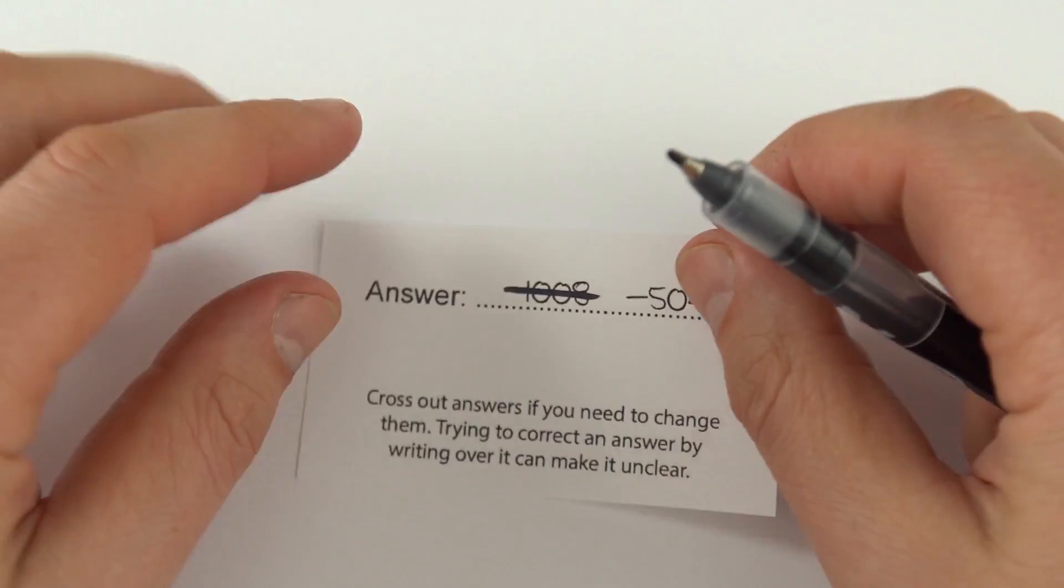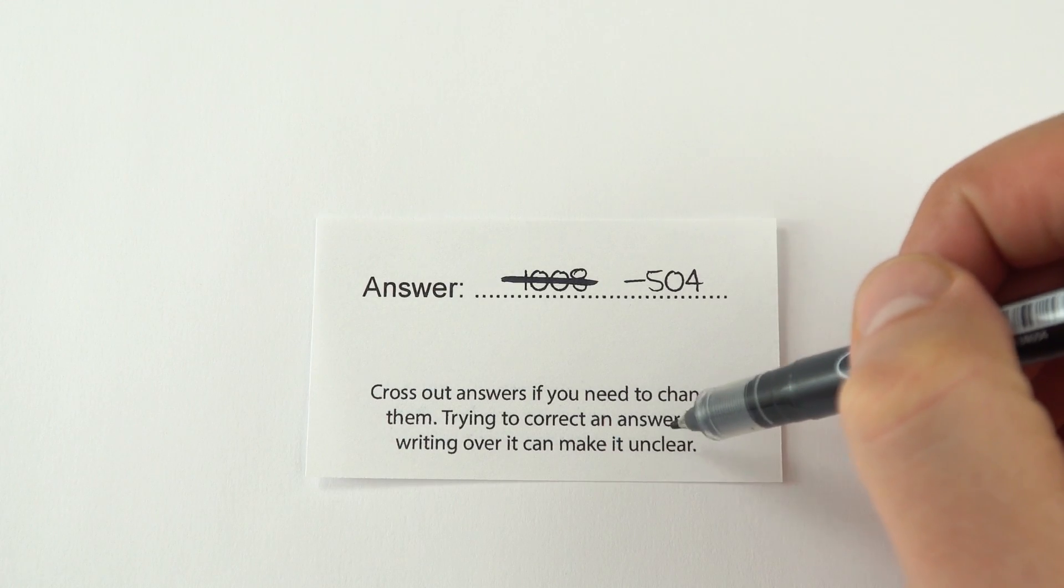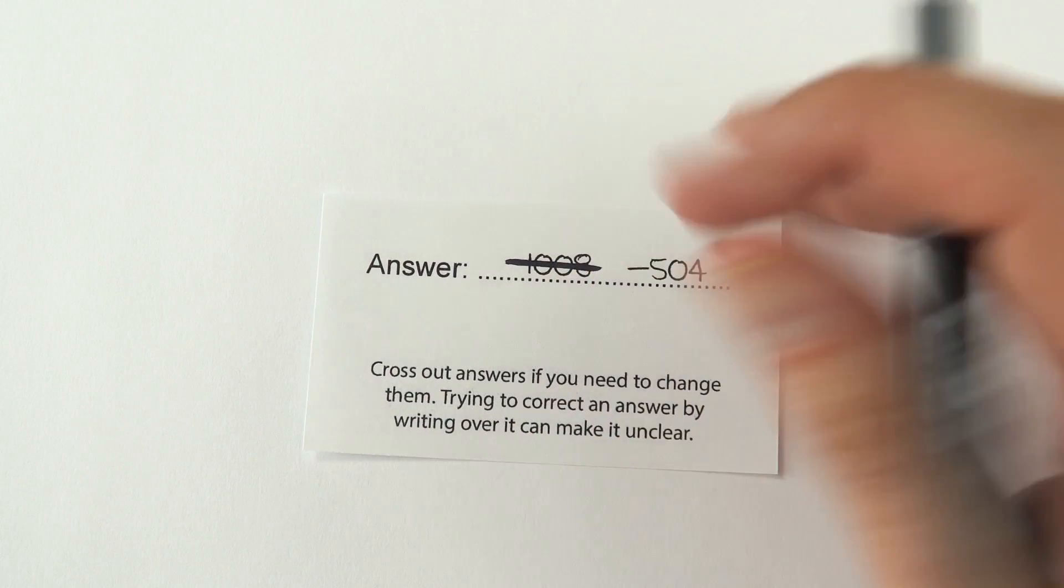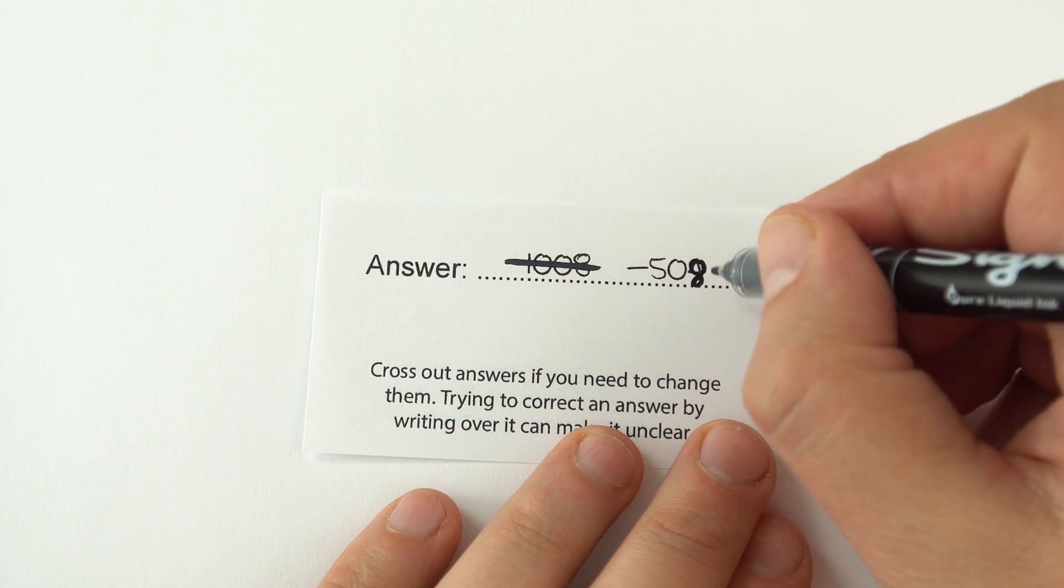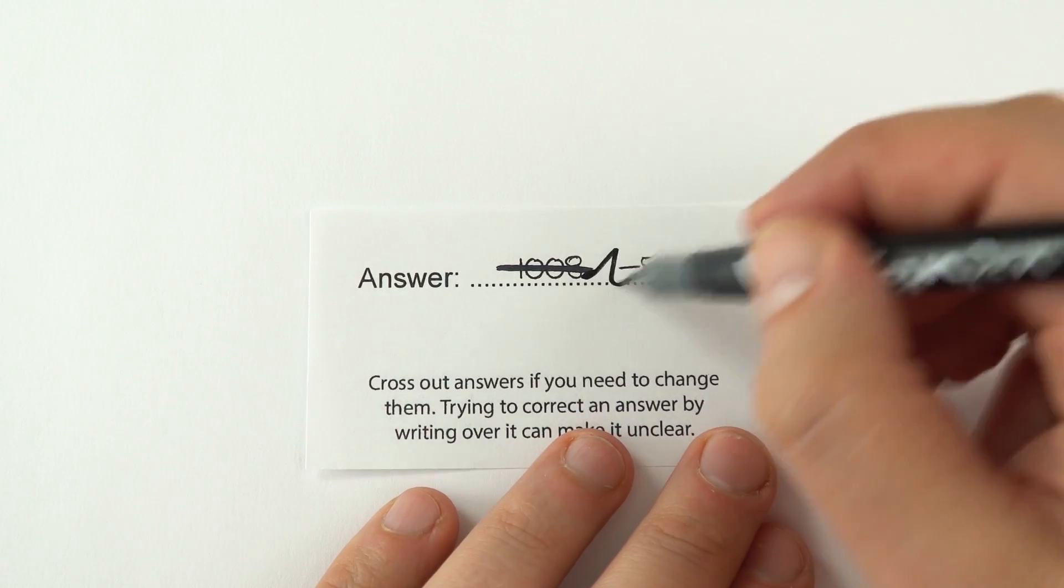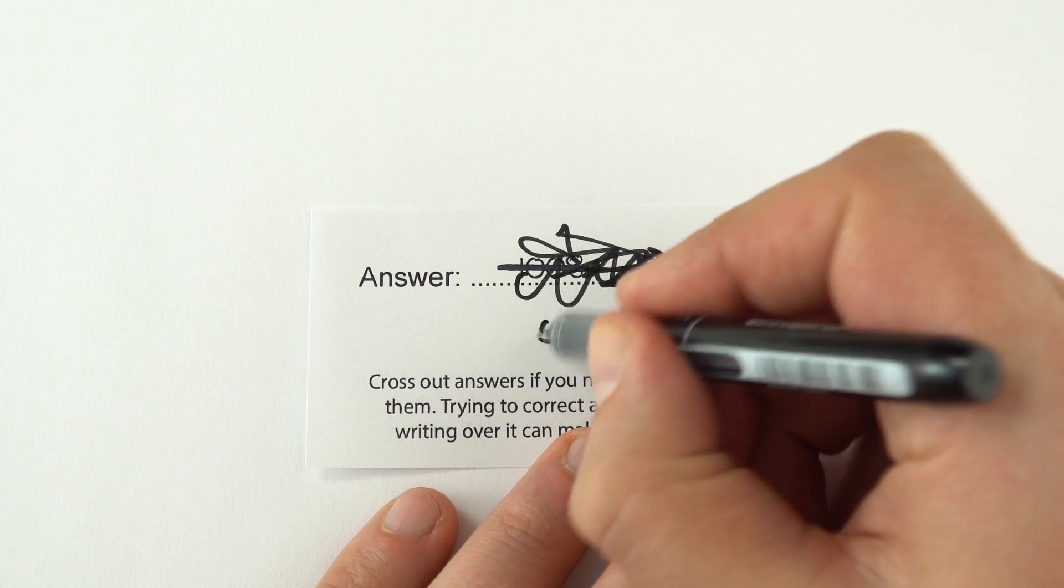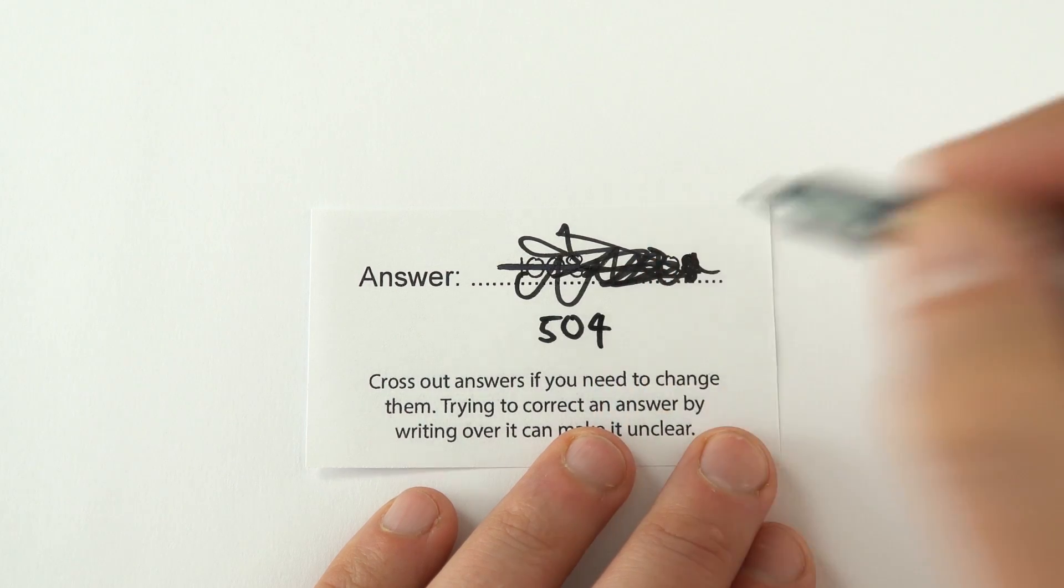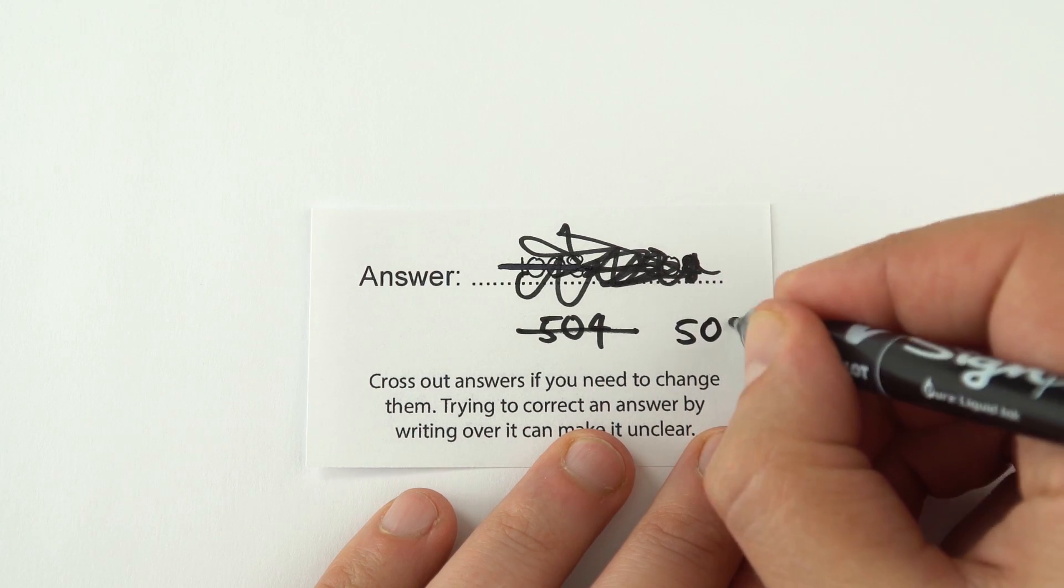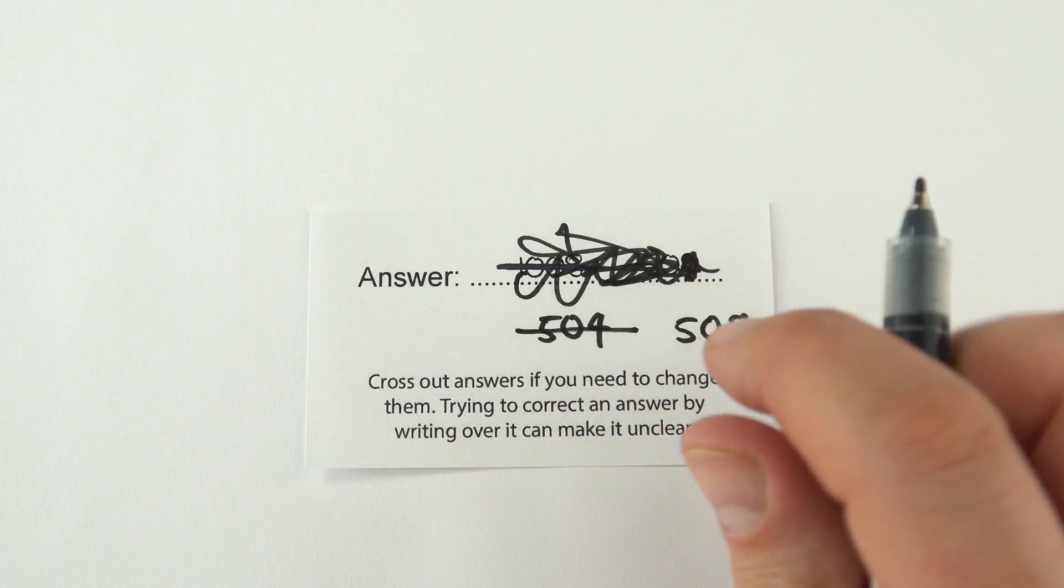In terms of keeping your answers nice and clear, trying to correct an answer by writing over it can make it unclear. Often this is where people argue the case, saying they did try to put that, and they changed it, but they changed it back again. If you're not clear about what that is, you get nothing. Don't scribble stuff out, because that starts to look messy. If you've written down the wrong answer and you want to change it, rather than trying to change the digit, cross it out, and to the side, write down the correct answer. Pretty straightforward stuff, but you'll be surprised at how many people don't do this.